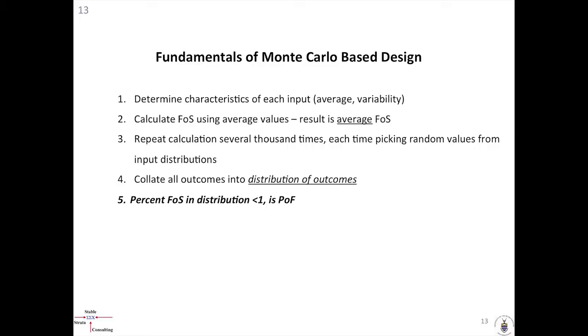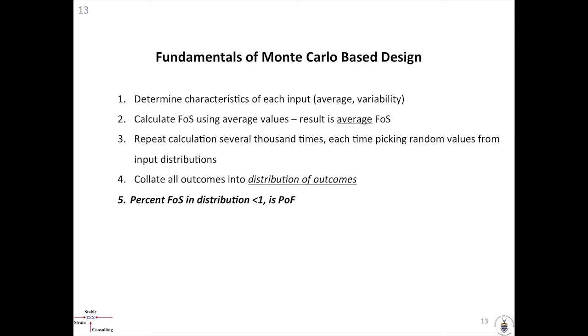Those cases where the safety factor is less than 1.0 — if you add them up and determine what percentage of the total they represent — that gives you your probability of failure. We end up with a distribution of all possible outcomes, provided we do a sufficient number of calculations. The number of calculations required depends on the variability: the more variable the input, the more variable the output, and the more calculations you need. There are statistical packages available commercially, but you can also use Microsoft Excel quite easily.